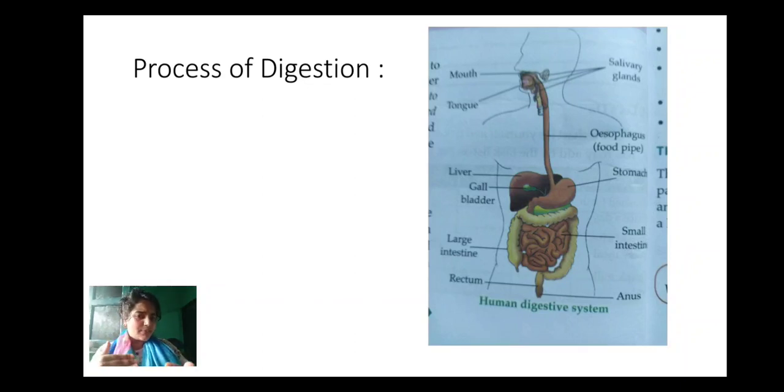Now what happens to the remaining food? That remaining food which is not required by our body, it goes into the large intestine. In large intestine, what happens? Large intestine will absorb the water or other nutrients which is present in that food. And that remaining food will again, what will happen? That leftover food or remaining food will pass out from our body through rectum and anus.